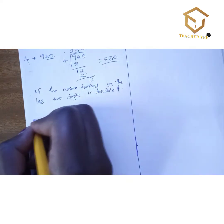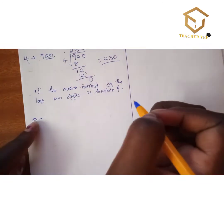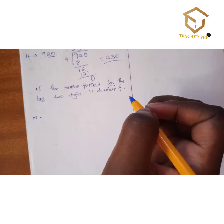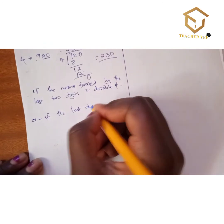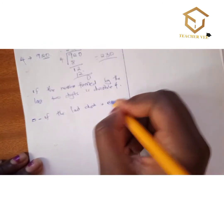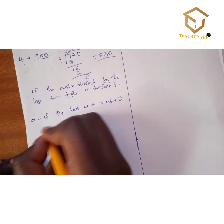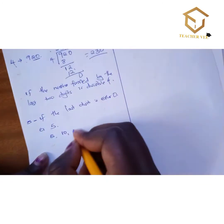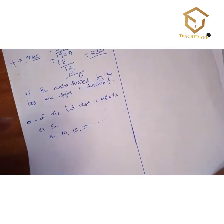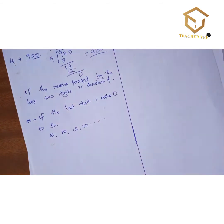Divisibility by 5: a number is divisible by 5 if its last digit is either 0 or 5. For example 5, 10, 15, 20, and so on. If a number ends with 0 or 5, it is divisible by 5.